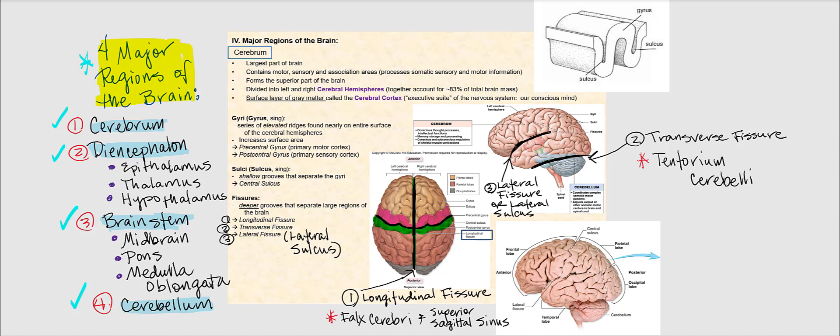Let's begin with the cerebrum. The cerebrum is the largest part of our brain. It contains motor, sensory, and association areas that will process somatic sensory and motor information. It also forms the superior part of our brain. The cerebrum is divided into the left and right cerebral hemispheres, which together account for approximately 83% of our total brain mass.